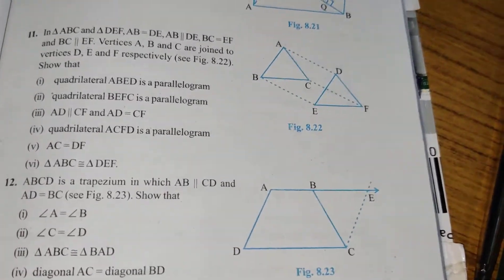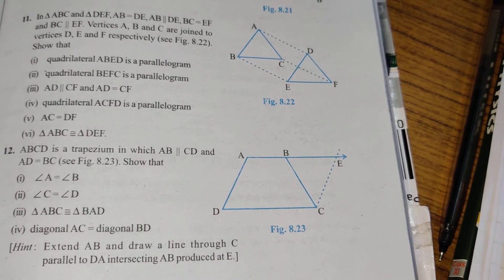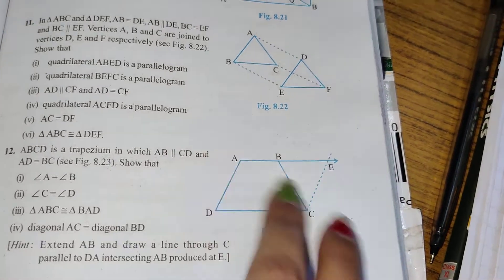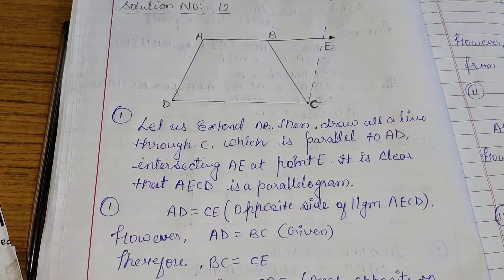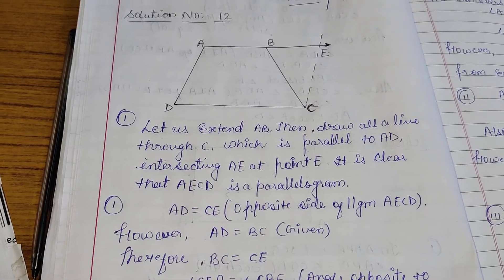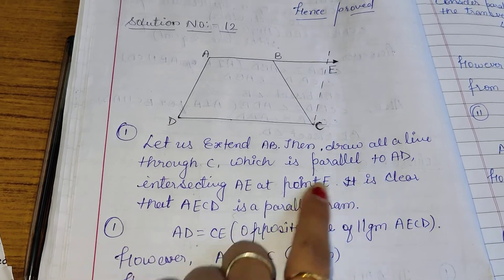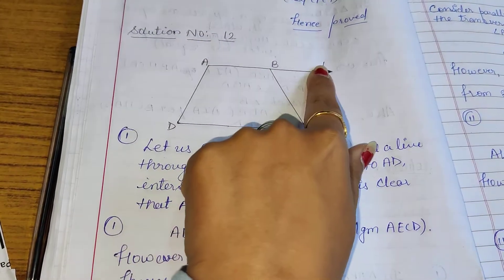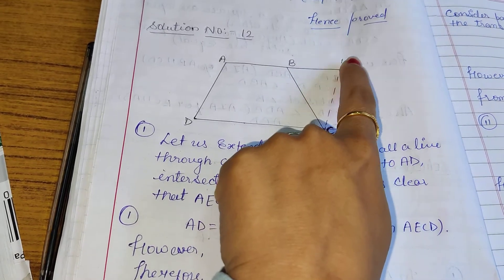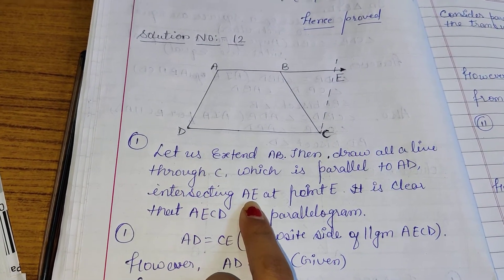In this question a hint is given: extend AB and draw a line through C parallel to DA, intersecting AB produced at E. In the solution, let us extend AB and draw a line through C parallel to AD, intersecting at E. Here we have extended a line from point C, which creates point E — the intersecting point E.